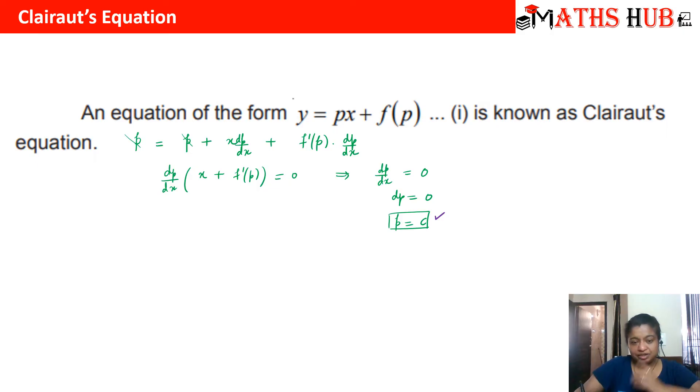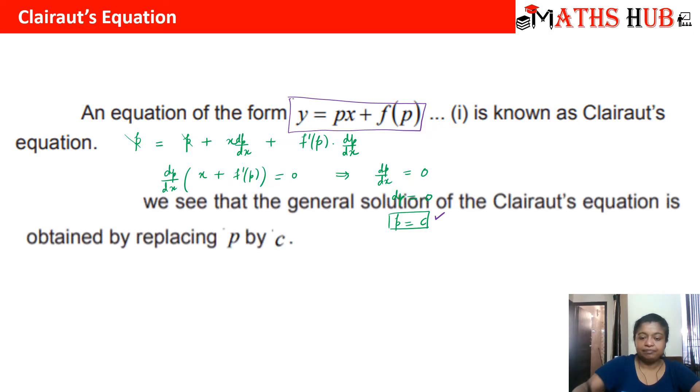If the equation is expressed in this form Y is equal to Px plus F of P, your job becomes very easy. You only have to substitute the variable P equal to some constant C. So your solution will become Y is equal to Cx plus F of C. This is the easiest of all the methods that we have discussed so far.